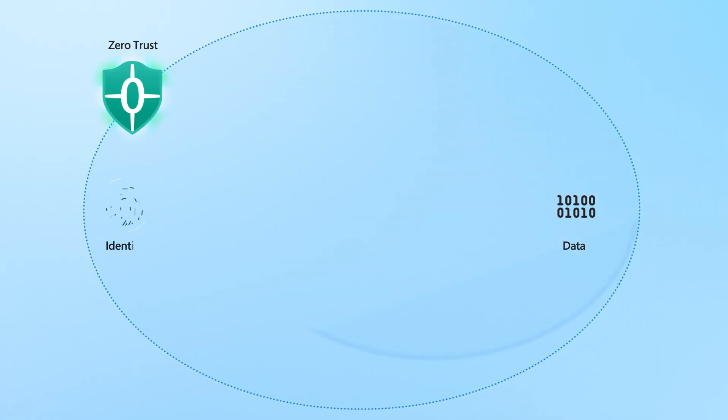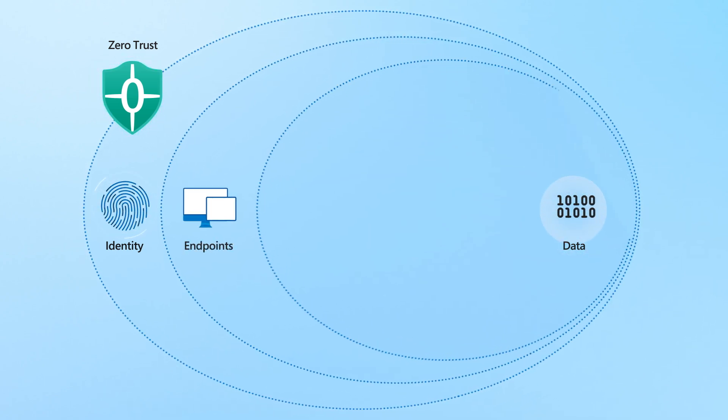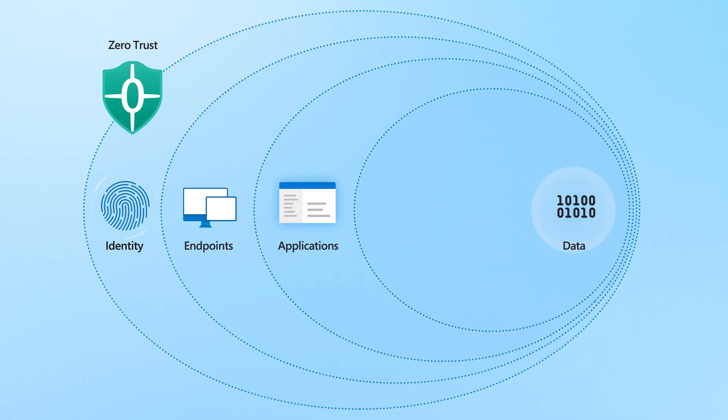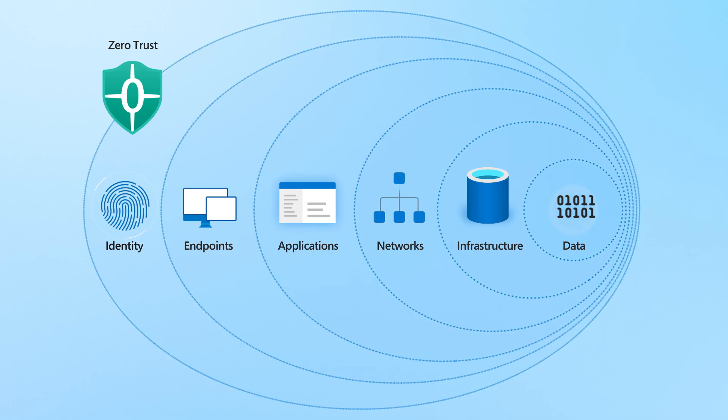Zero trust is a topic we've covered extensively on Mechanics, which you can check out at aka.ms/zerotrust-mechanics. To break it down, it's all about verifying the identity of any person or entity, as well as any endpoint device, application or service, network connection, infrastructure component, along with applying protections to the data itself. And on the surface, this does sound pretty comprehensive, but what are some of the other considerations in terms of architecting, building, or migrating a workload to the cloud? Across all of those areas, you have to factor in the right processes and operations.